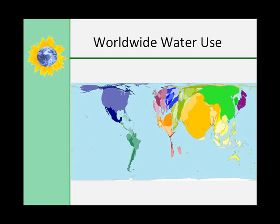This does not include non-consumptive uses such as energy generation, mining, and recreation. China, India, and the United States use the most water. Water use per person is about three times higher in the United States than it is in India or China. On average, people living in Central Africa use only 2% of the water per person that people in the United States do.